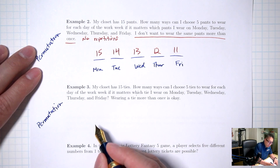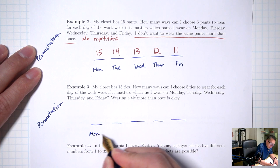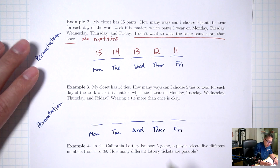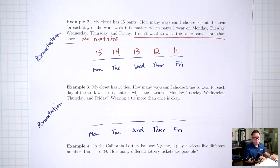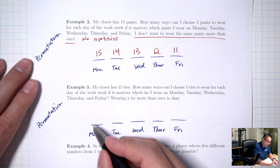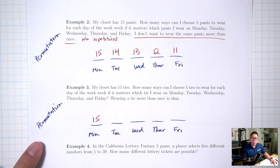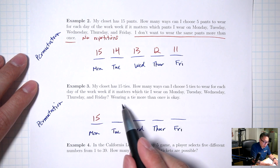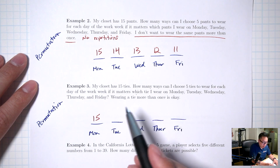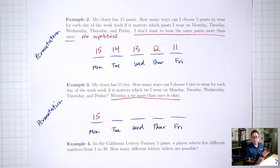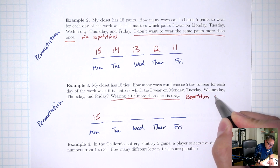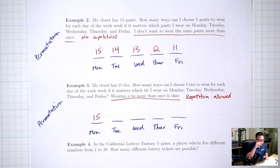Example 1: my closet has 20 shirts. How many ways can I choose 7 shirts to pack for my summer vacation? Does the order I choose these 7 shirts matter? No — I just take the 7 shirts and stick them in a suitcase. It doesn't matter which shirt I chose first or second. The order does not matter, which means it's a combination: 20 choose 7.